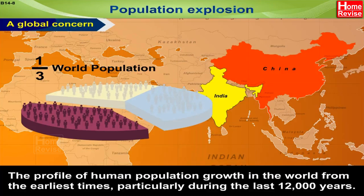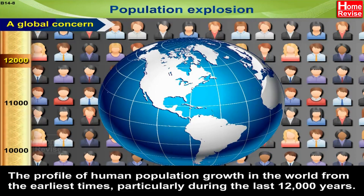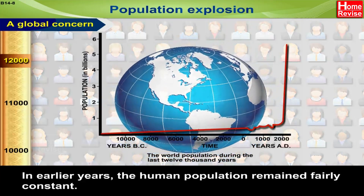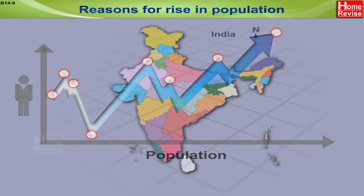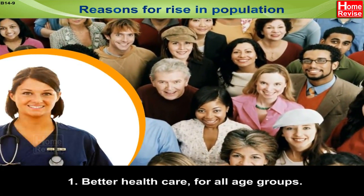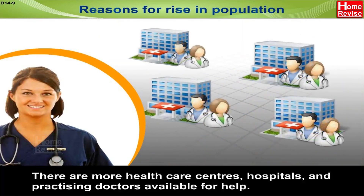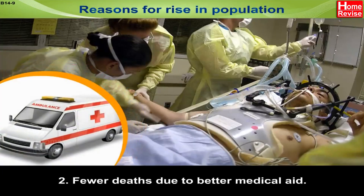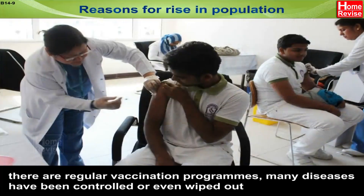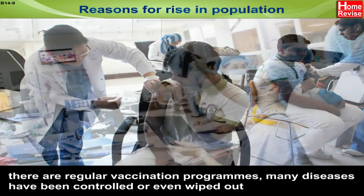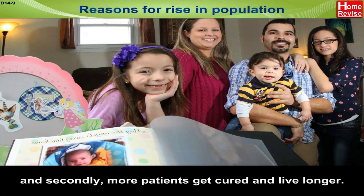This figure represents the profile of human population growth from the earliest times, particularly during the last twelve thousand years, when earlier human population remained fairly constant. Reasons for the rise in population: number one, better healthcare for all age groups — there are more health care centers, hospitals, and practicing doctors available. Number two, fewer deaths due to better medical aid: there are regular vaccination programs and many diseases have been controlled or even wiped out.